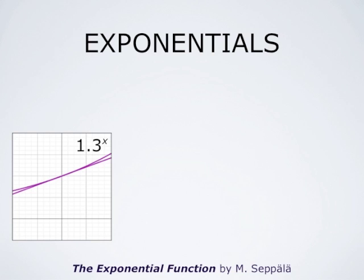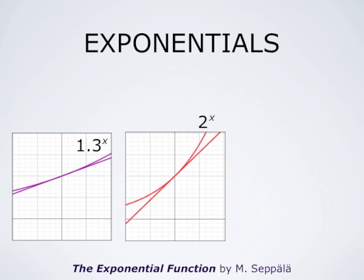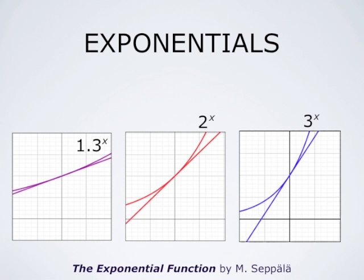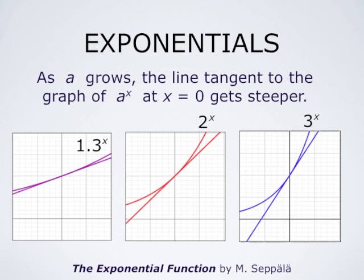This picture shows the graph of the function 1.3 to the power x together with the graph of the line tangent to it at x equals 0. The same is shown for 2 to the power x — the red curve is its graph and the red line is its tangent at x equals 0. And for 3 to the power x — the blue curve is its graph and the blue line is the tangent at x equals 0. We conclude that as a grows, the line tangent to the graph of a to the power x at x equals 0 gets steeper.